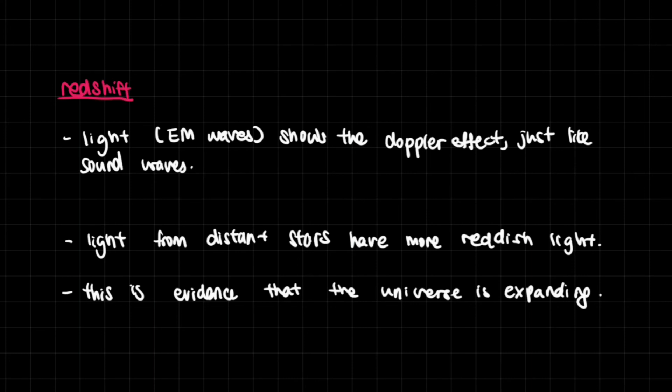The lights of lower frequency, of longer wavelengths and lower frequency, they go towards the yellows and the oranges and they move towards the red part of the spectrum. Now astronomers found out that the light from the distant stars tends to be slightly more reddish than the light from nearby stars.